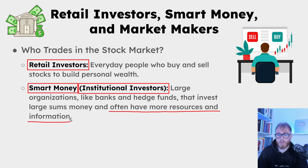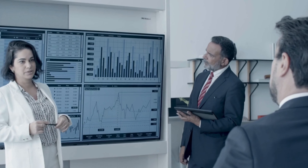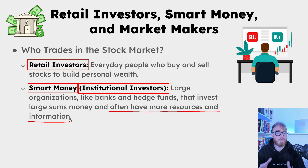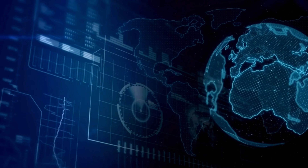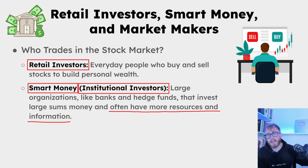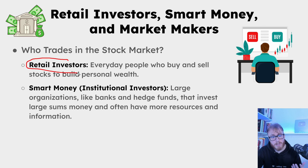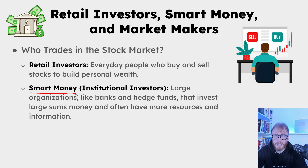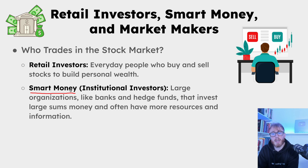An important aspect about smart money is that they often have more resources and information compared to retail investors — both in terms of labor (more people working) and more advanced tools and access to more data. It can be easy to think smart money will always have the upper hand, but there are actually a few benefits of being a smaller trader as well. For example, institutional investors are often restricted to certain markets and timeframes, have more rules, and with large capital cannot trade super small stocks.